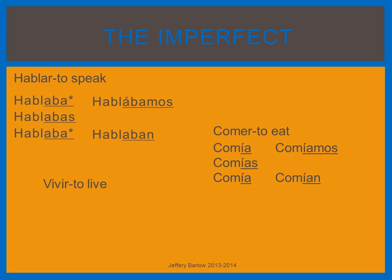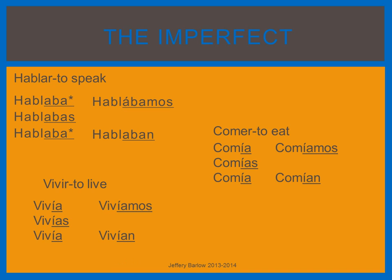Vivir is an example of a regular IR verb. IR verbs in the imperfect use the same endings as the ER verbs. As you can see, they follow the same pattern whether it's AR, ER, or IR.